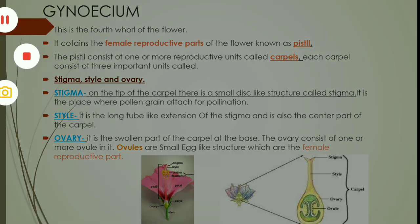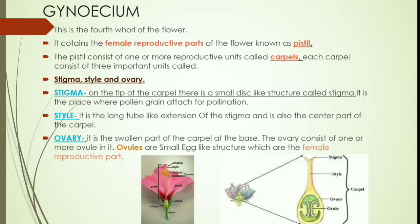The last whorl of the flower is gynoecium — the fourth whorl. It consists of the female reproductive parts of the flower known as pistil. The pistil consists of one or more reproductive units called carpels. Each carpel consists of three important parts: stigma, style, and ovary, as you can see in the picture.